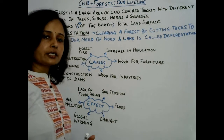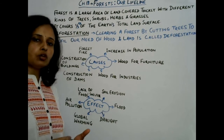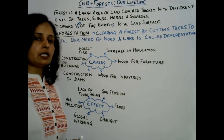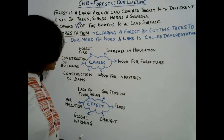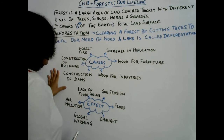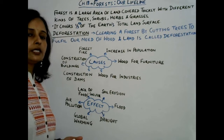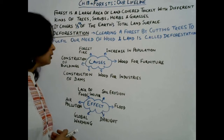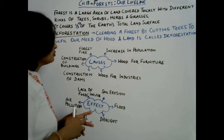Then, construction of dams — for constructing dams as well, there is cutting down of forest. Forests near rivers are cut, because dams are usually constructed on rivers and nearby the rivers, forests are also found in some places, and those forests are cut down for dams. Then, construction of buildings — so many buildings are constructed nowadays. We need more and more houses and shopping places, and for that also there is cutting down of forest.